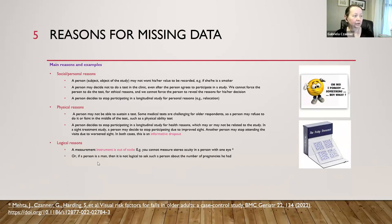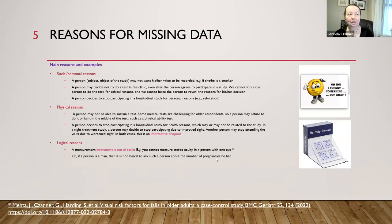Another logical reason is 'not applicable' — for example, we cannot ask a man about number of pregnancies. So if we write zero for men in a pregnancy database, that zero has a different meaning than a zero for a woman. We need to be careful about that.